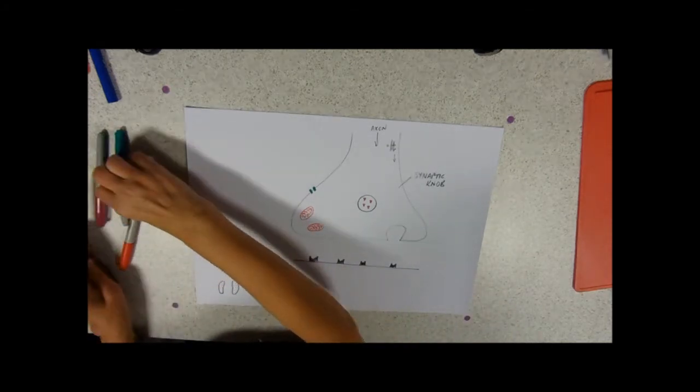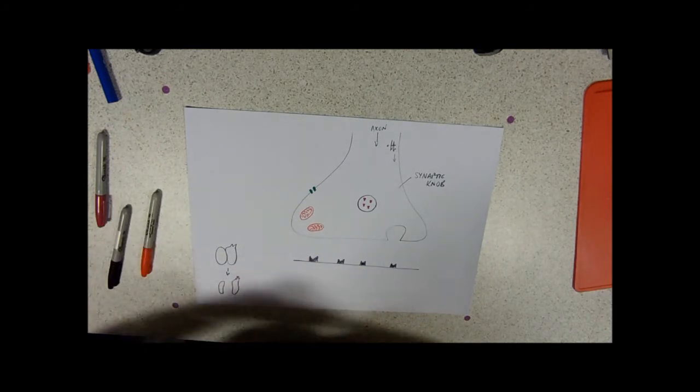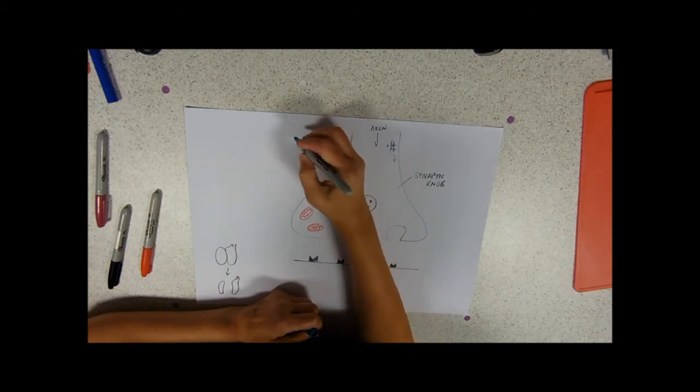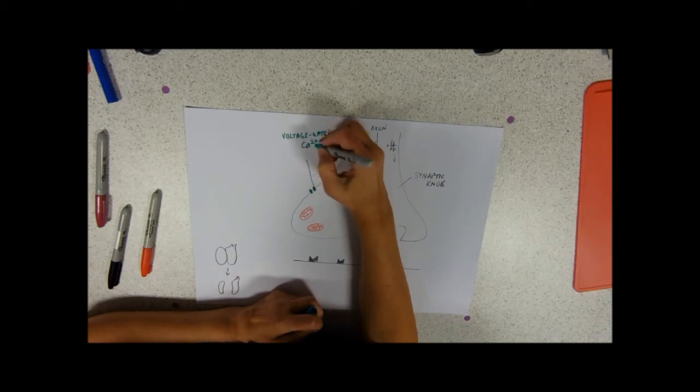You'll see that I've put some channels, a little channel in the membrane here. And again, this is a voltage-gated channel, just like we came across in the nervous system, but this time it's for calcium. So this represents a voltage-gated calcium ion channel.